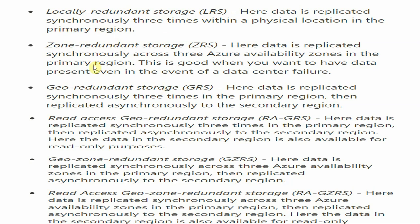Zone Redundant Storage, or ZRS, replicates your data synchronously across three Azure availability zones in the primary region. So if one zone goes down, you will still have access to your data from another zone.